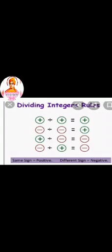Division rule — it is the same as the multiplication rule. Plus divided by plus is equal to plus. Minus divided by minus is equal to plus. Plus divided by minus is equal to minus. Minus divided by plus is equal to minus. To summarize: same sign is equal to positive sign, and different sign is equal to negative sign.